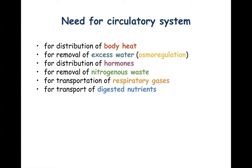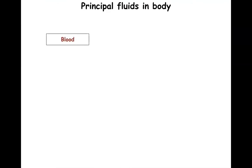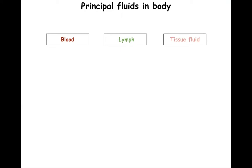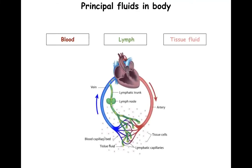It is required for transport of digested nutrients. After the digestive system has digested the food, the nutrients which are absorbed need to be sent to various areas. This is done with the help of circulatory system. There are three primary fluids in the body: blood, which is the main fluid pumped by the heart; lymph, a straw-colored liquid that flows in lymph vessels; and tissue fluid, which is present in and around tissue spaces. These three fluids collectively are responsible for distribution of all the aforesaid substances uniformly in every part of the body.